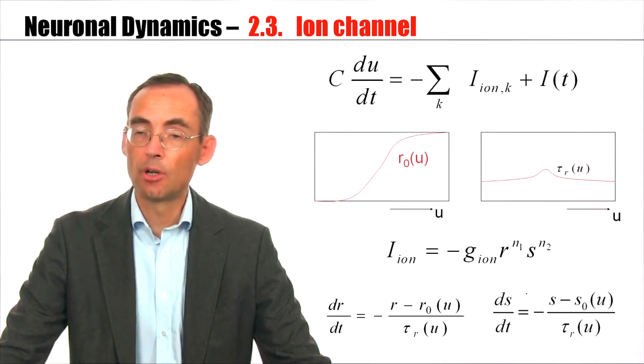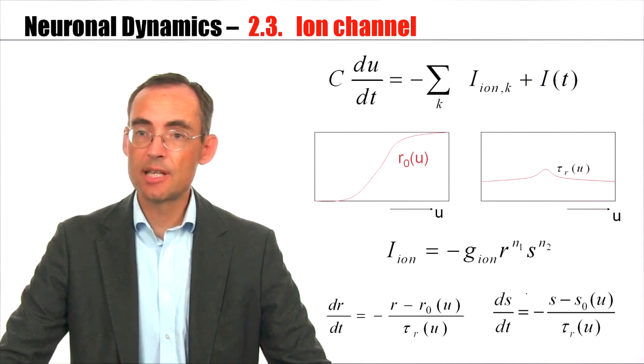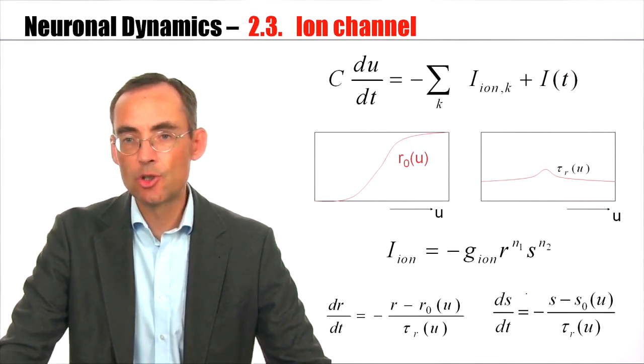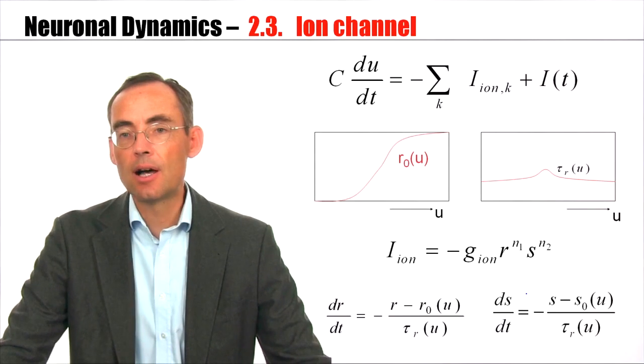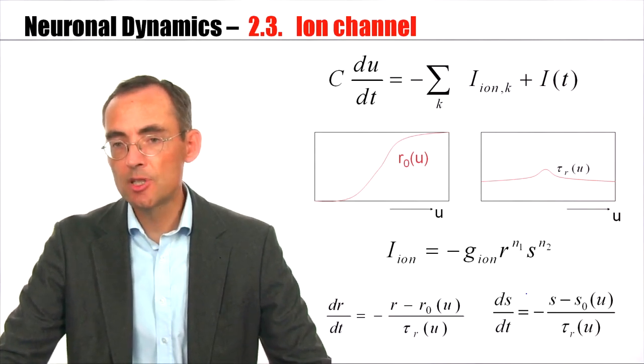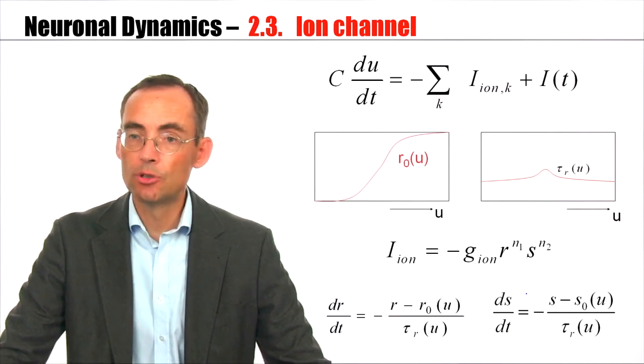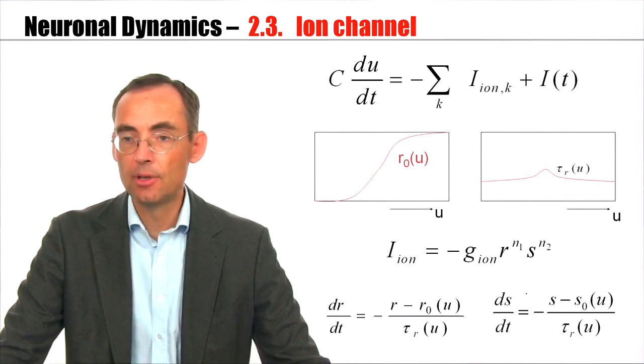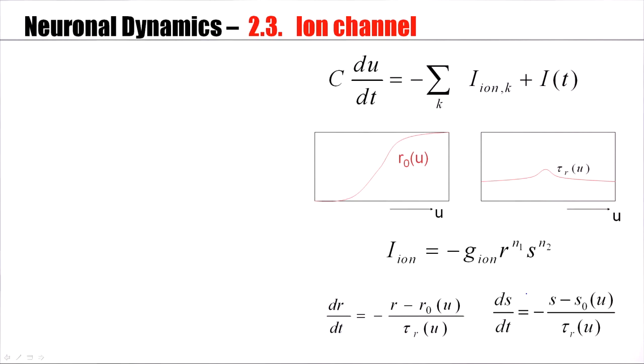So far for the Hodgkin and Huxley model, why is it so successful? In fact, it tells a story. It tells us, for each ion channel, for each possible ion channel, how we could possibly write down an equation. There are gating variables.